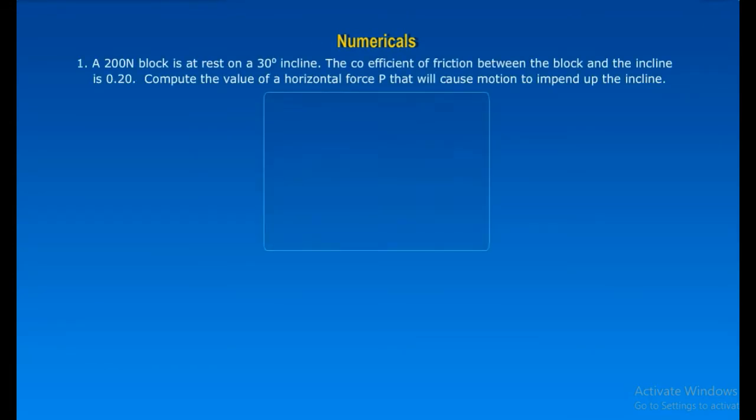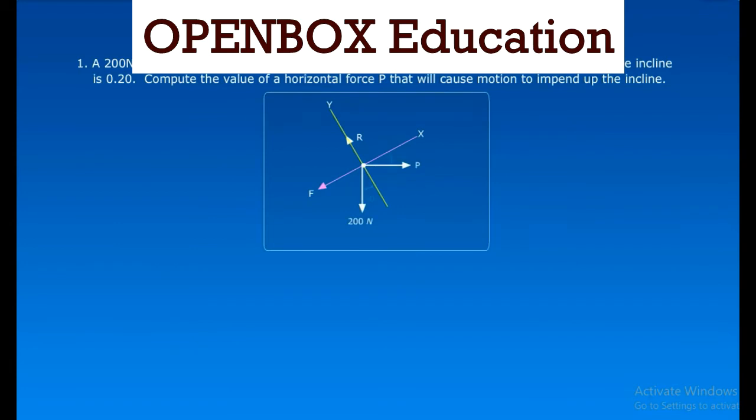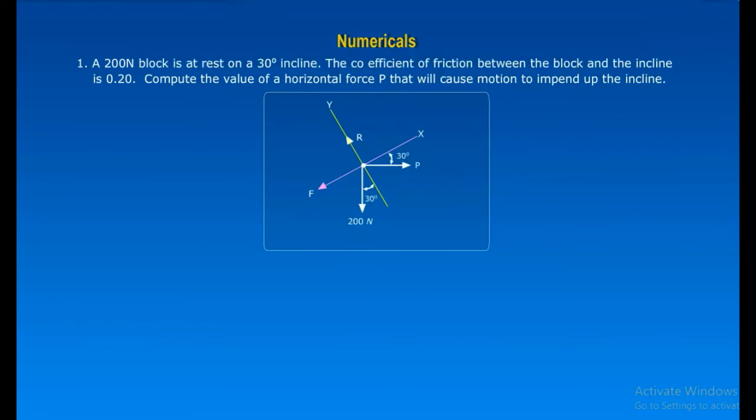Numericals. A 200 newtons block is at rest on a 30 degrees incline. The coefficient of friction between the block and the incline is 0.20. Compute the value of a horizontal force P that will cause the motion to impend up the incline. Click to see the solution of the problem.